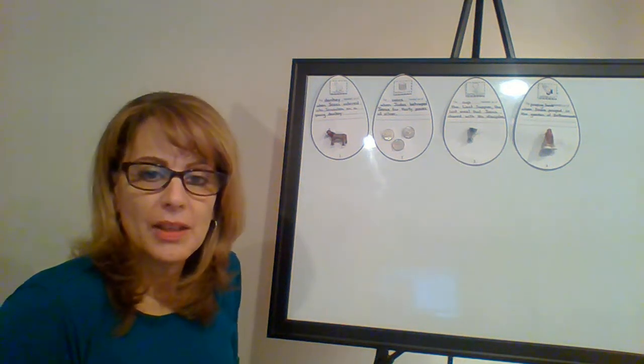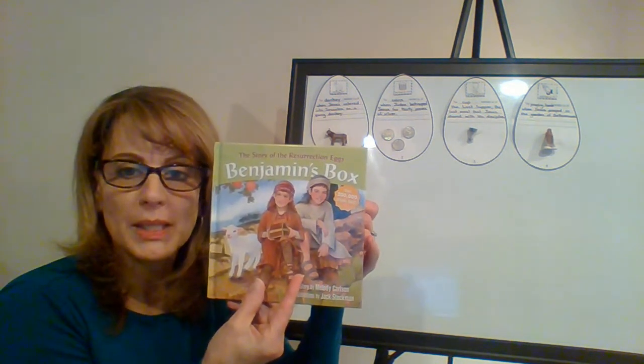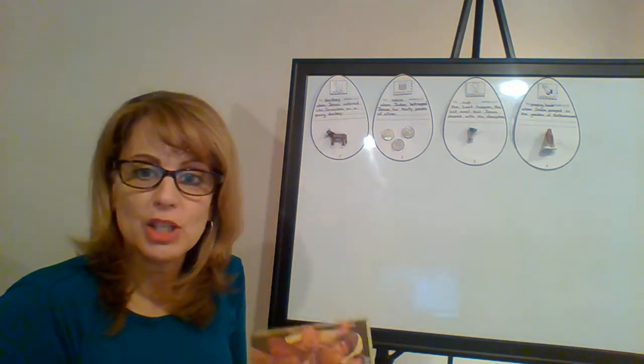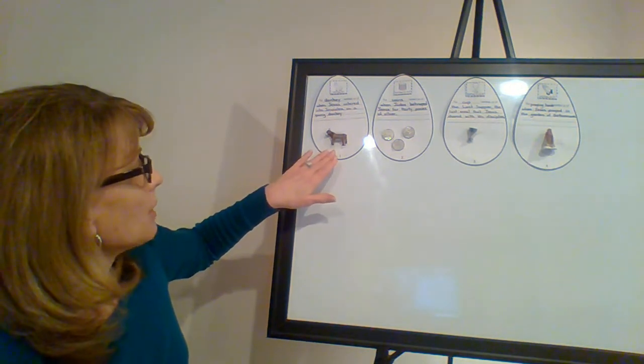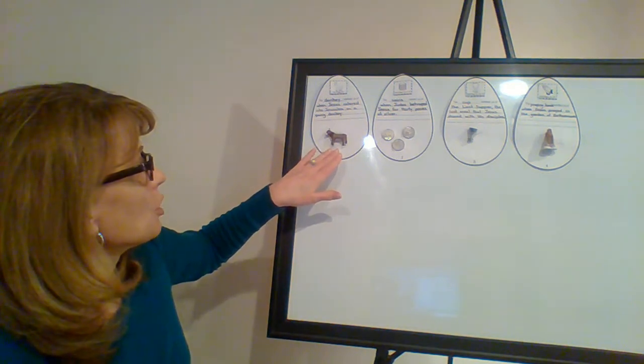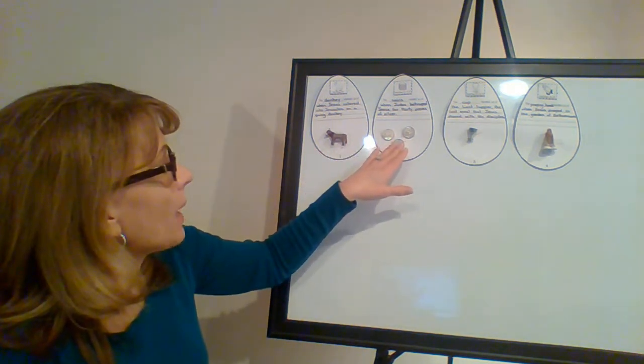I'm back again. This is where we are continuing the story of Benjamin's Box and the Resurrection Eggs. We have the donkey, which reminds us of when Jesus entered into Jerusalem on a young donkey. The coins remind us of when Judas betrayed Jesus for 30 pieces of silver.